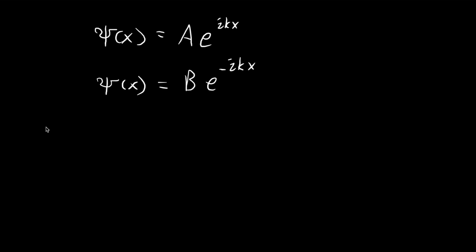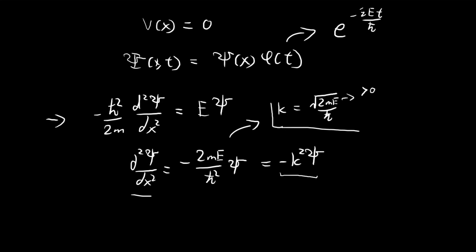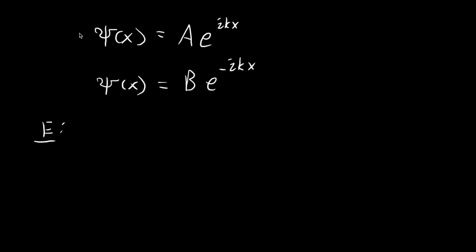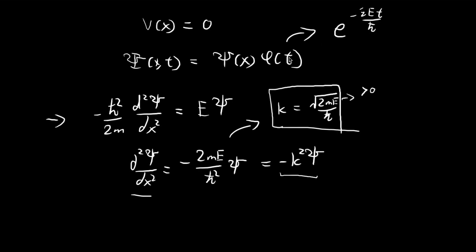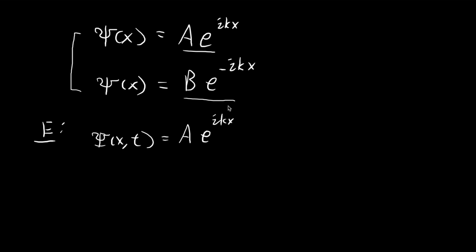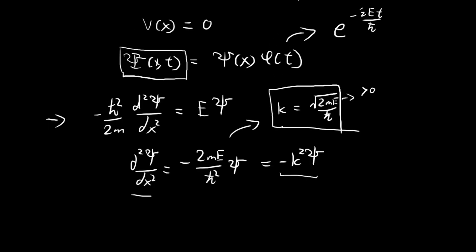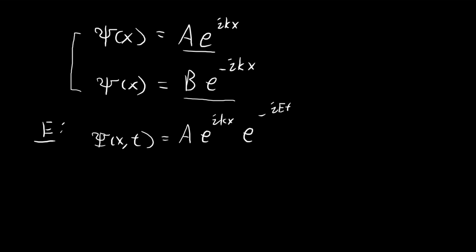For a given energy level, we can use the expression for k to obtain our value of k. For a corresponding k, we have two possibilities for ξ(x), given by those two expressions. So for a given energy level E, we actually have two possible wave functions. One possibility is the first expression times φ(t) — don't forget, this is the ultimate expression we're looking for. So for the first possibility of ξ(x), we multiply it by φ(t).